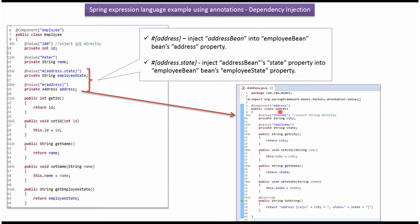Here I have defined the class Address. In the Address class I have applied the @Component annotation and it has two properties: city and state. The city value will be set as Chennai and the state value will be set as Tamil Nadu by the Spring container. It has getter and setter methods for these two properties. Here I have also overridden the toString method.